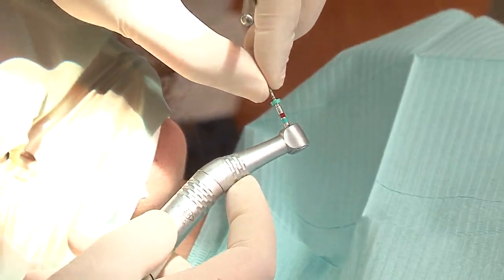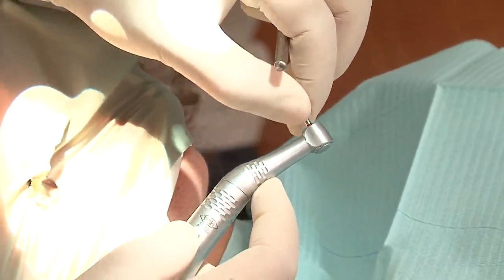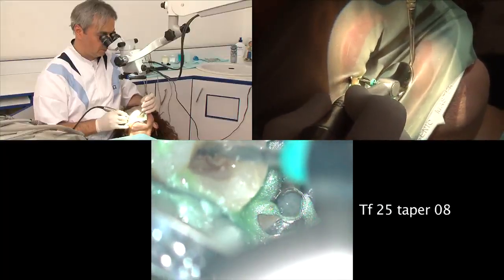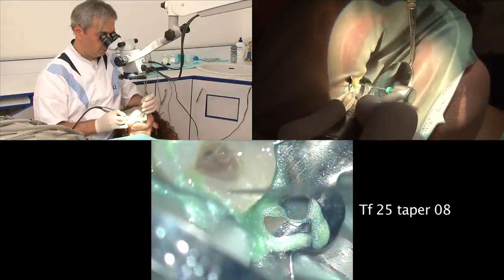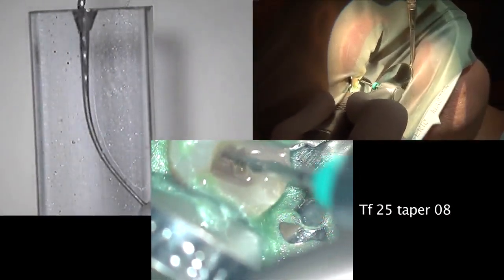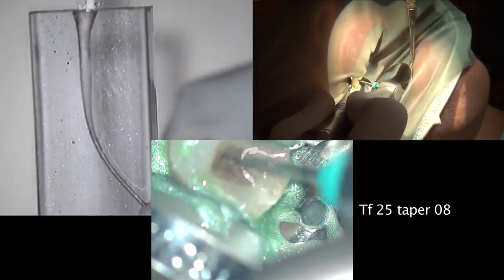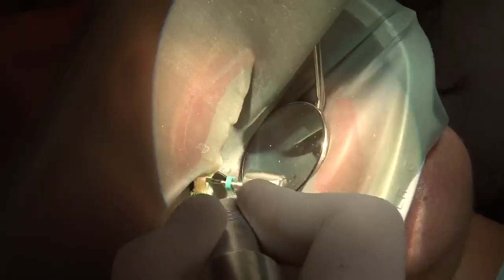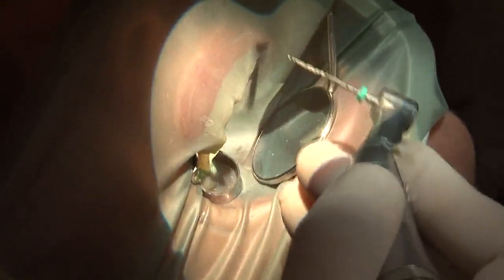We start the crown-down technique using TF files 25 taper 8 and 25 taper 6. This is a 25 taper 08. We never insert the file and lock it inside the root canal, and we never rotate the file outside the root canal. What we need to do is to insert the file until we have a contact, go back one or two millimeters, rotate and do a four stroke movement with 500 to 600 RPMs and our torque level is set to maximum. This is the buccal canal. One, two, three, four strokes, as deep as it goes.